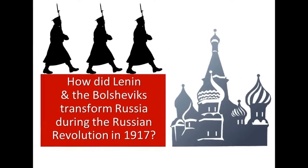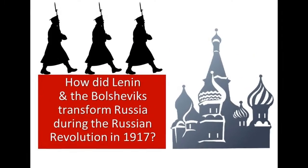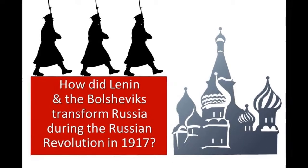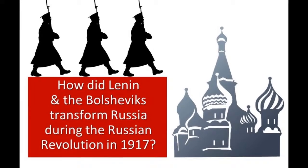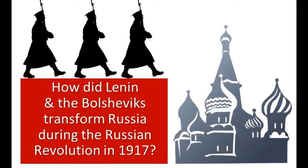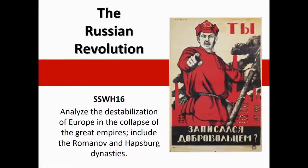How did Lenin and the Bolsheviks transform Russia during the Russian Revolution in 1917? We will analyze the destabilization of Europe in the collapse of the Great Empires, including the Romanovs and the Habsburg Dynasties.